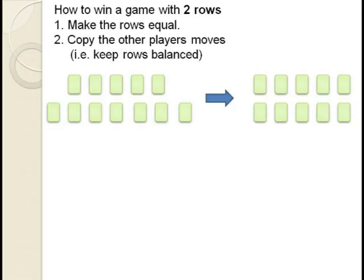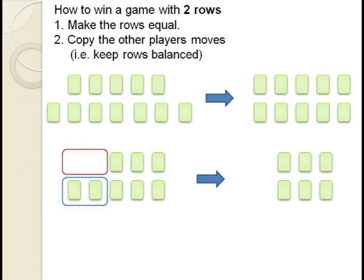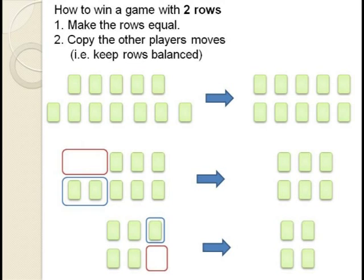Suppose we have the game pictured here with only two rows. Player one could force a win by removing two markers from the bottom row creating two balanced rows. Now whatever player two does, player one just has to copy that for the other row. Eventually player two will have to eliminate a row and then player one eliminates his row and wins. So a game of NIM with only two rows is easily won by being the first person to balance the rows.